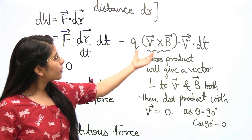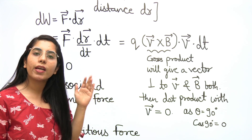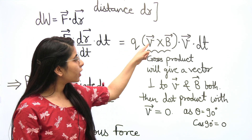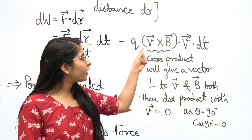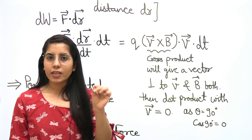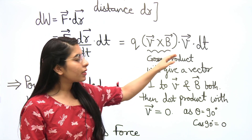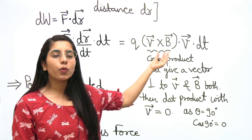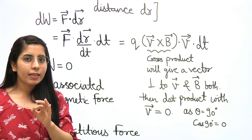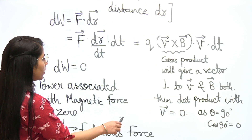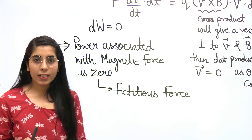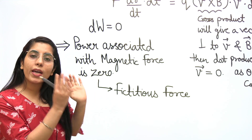After this, consider the term V cross B. This is the cross product of two vectors V and B. When you find the cross product, you get a vector quantity that is perpendicular to both V and B. So when you find the dot product of that resulting vector with V, you get a cos theta term — since A dot B equals AB cos theta. Theta will be 90 degrees because the cross product vector is perpendicular to V, giving cos 90° = 0. So the final answer is DW = 0. This tells us that the power associated with this magnetic force is equal to 0.